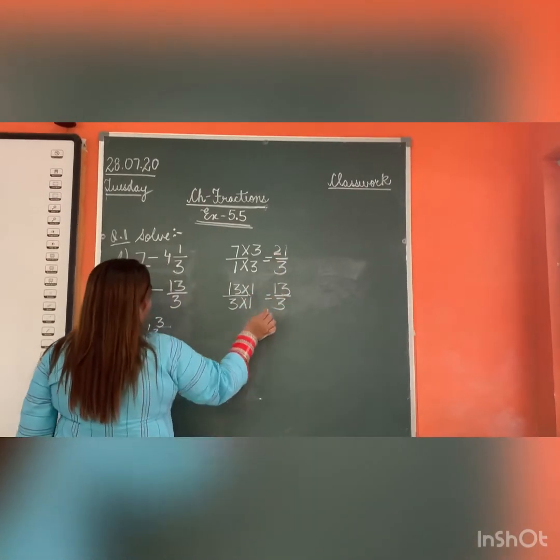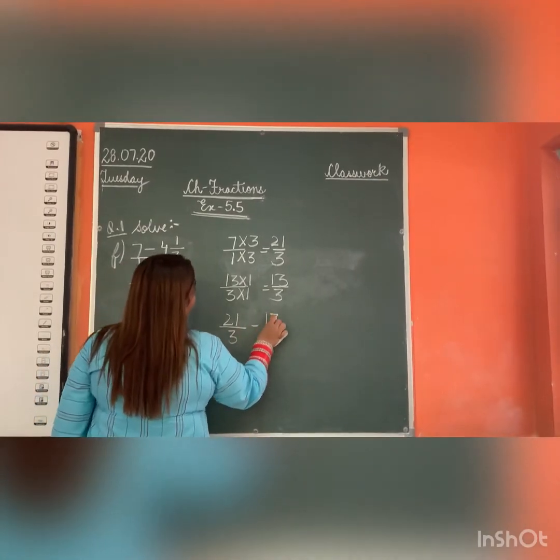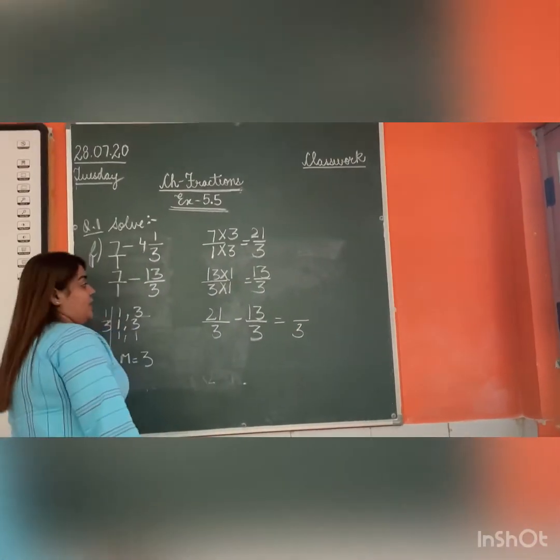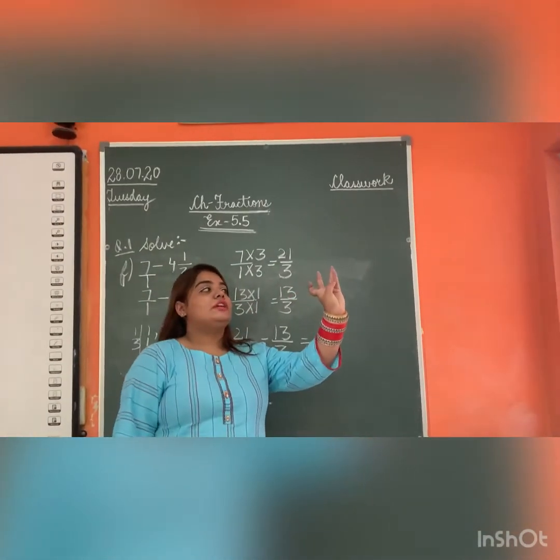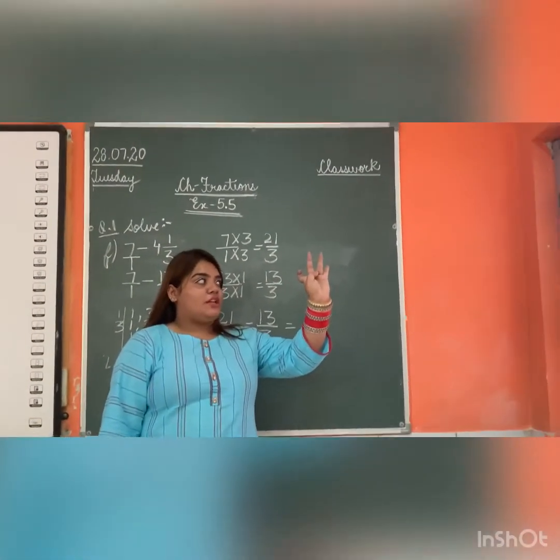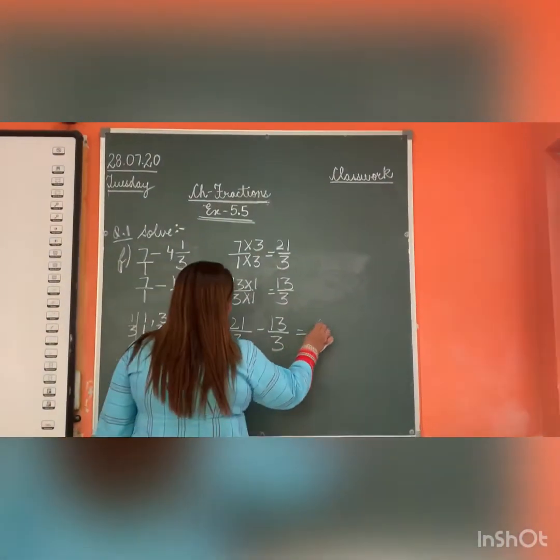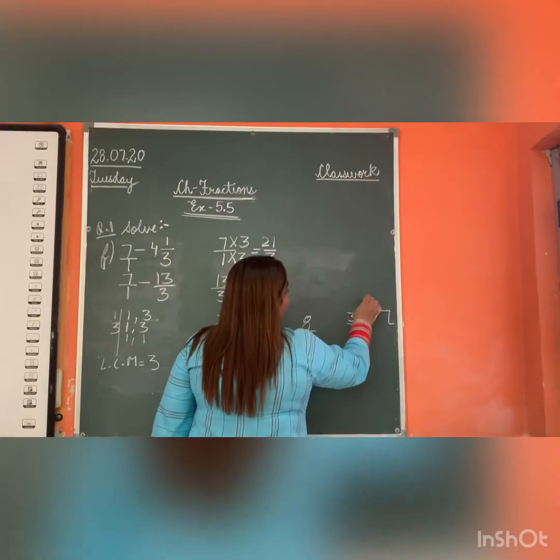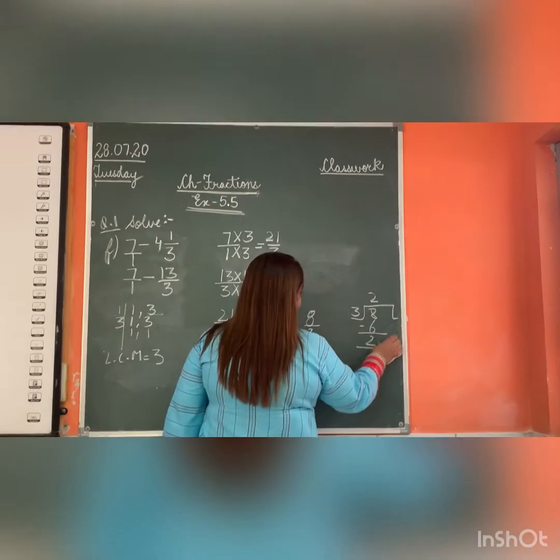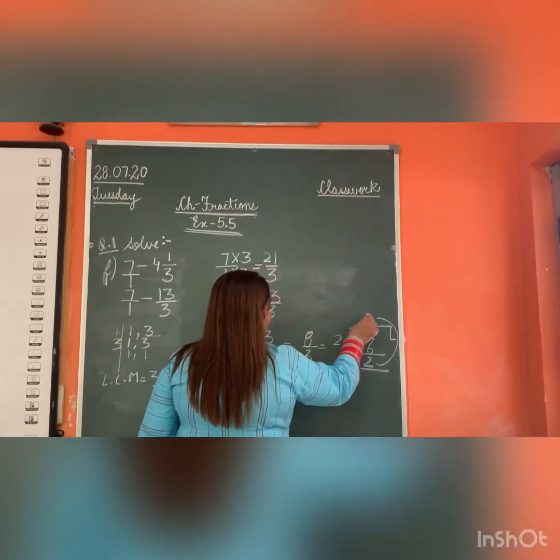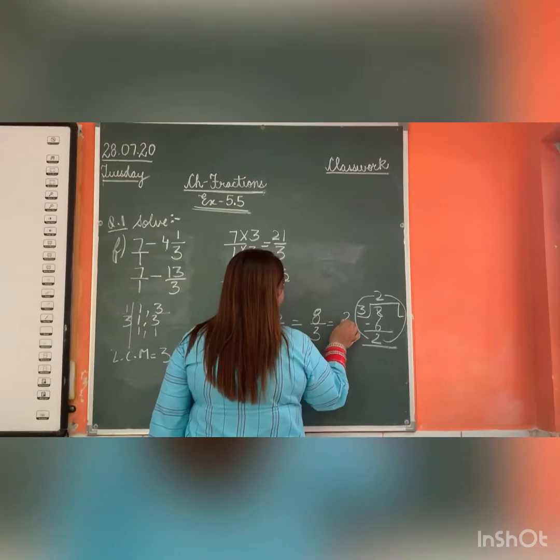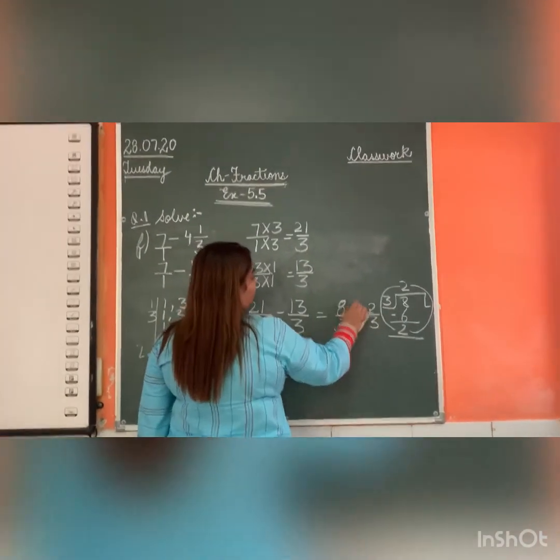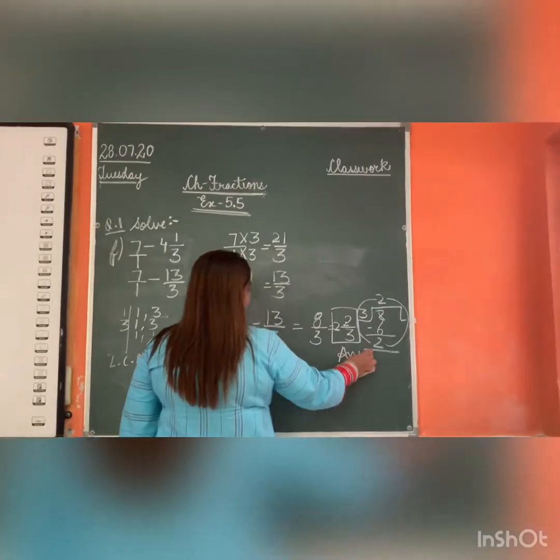Now we will subtract. Now we will have like fractions. The denominator is same. 21 minus 13, 14, 15, 16, 17, 18, 19, 20, 21. Left over is 8. Now we have improper fraction so we will convert into mixed fraction. 3 into 2, 6. Minus 2. Yeh 2 upar jala jayega. 8 minus 6 plus 2. And 3 umarang jaya, 2 by 3. Is it clear?